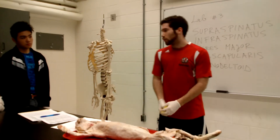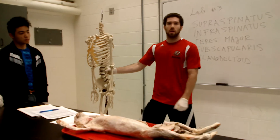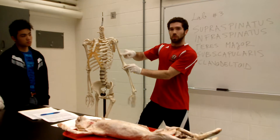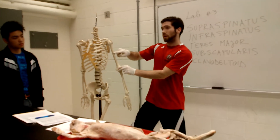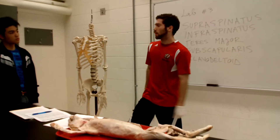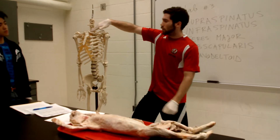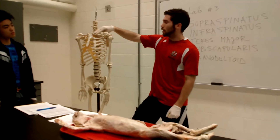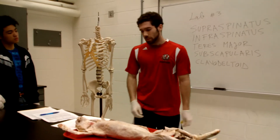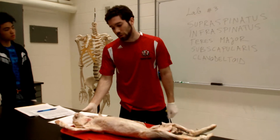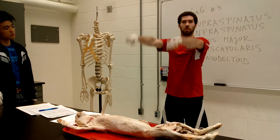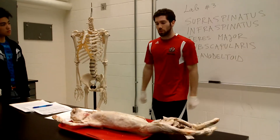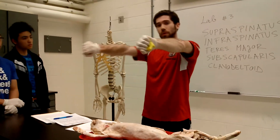The deltoids all have their origin indicated in their name, and they all insert into the deltoid tuberosity on the lateral shaft of the humerus. Clavo deltoid is the most anterior one, originating from the clavicle, and it assists with shoulder flexion and medial rotation — helping when you bring your arms up in front of you along with pec major.